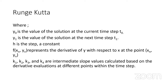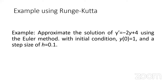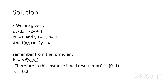Using the same example as before — dy/dx = -2y + 4 with y = 1 when x = 0 and H = 0.1 — note that y prime and dy/dx are equivalent. This is a first-order equation. We now apply the RK4 formula.